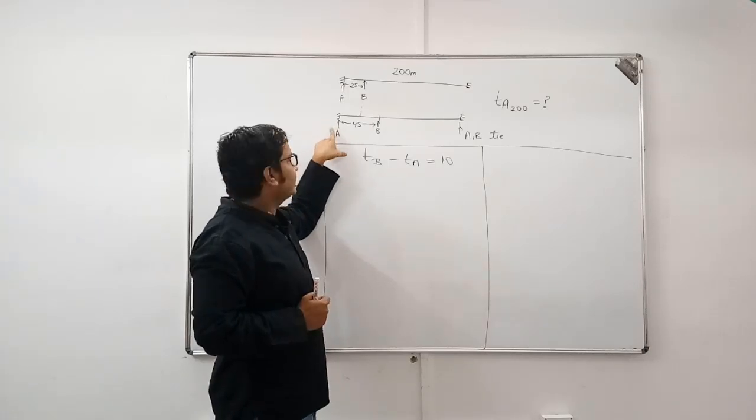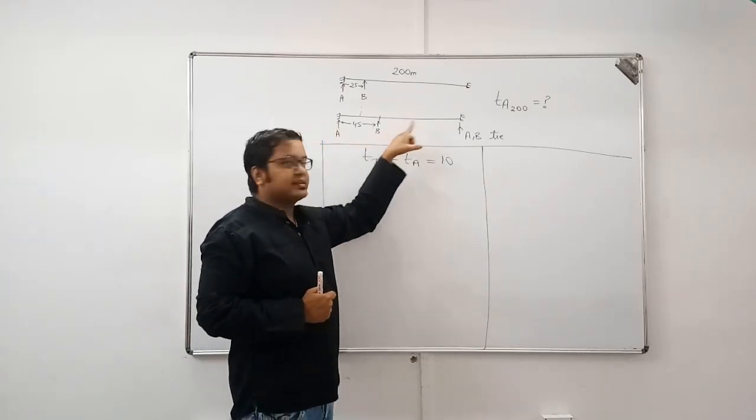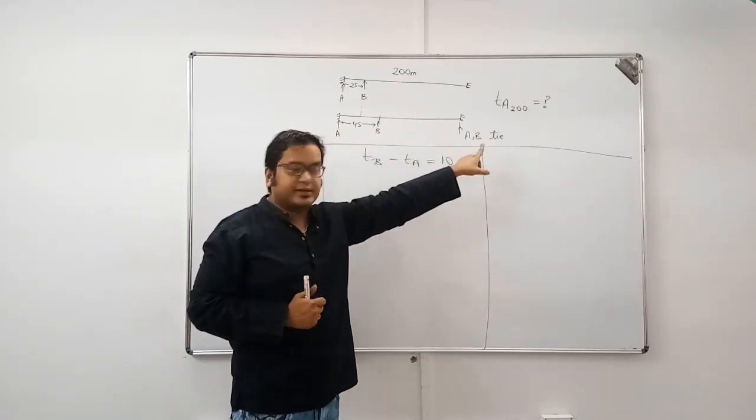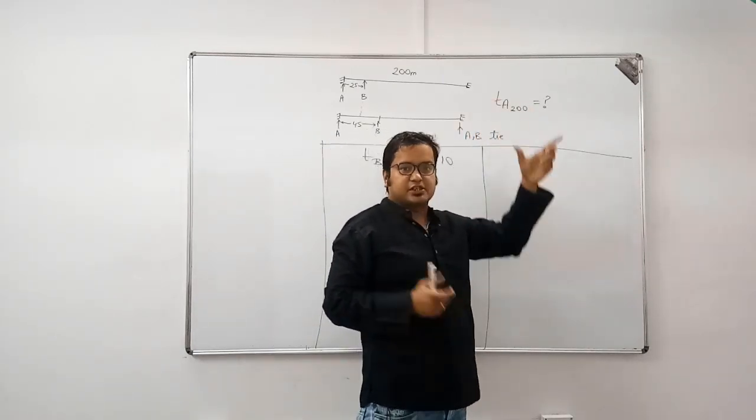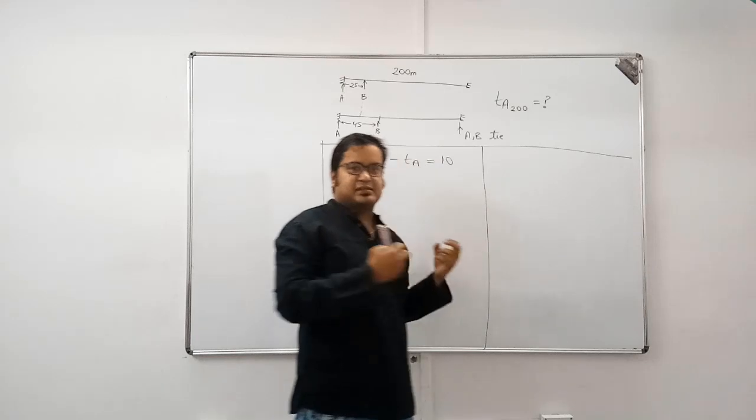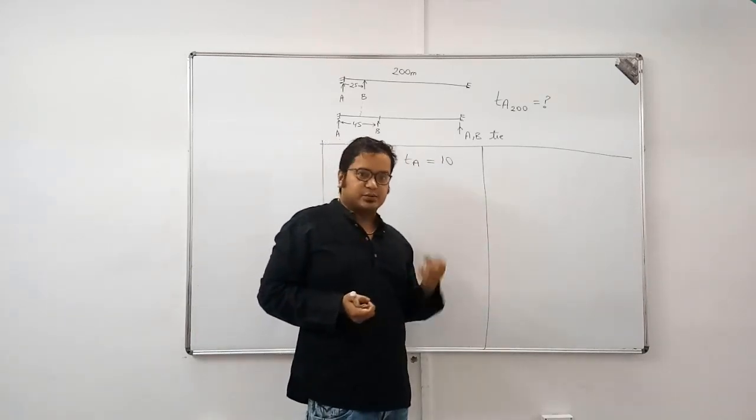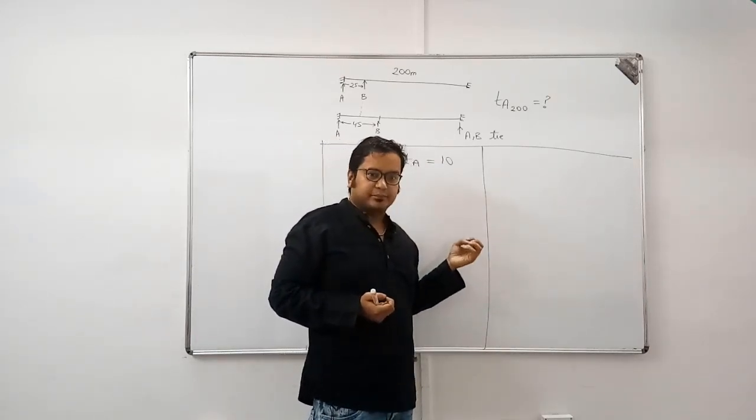In another case, when A gives B a start of 45 meters, the race ends in a dead heat. You need to find out the time taken by A to run this distance of 200 meters. I will explain this question using the multi-step pedagogy. First method.